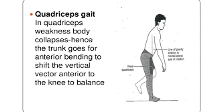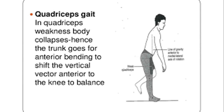Quadriceps paralysis leads to loss of extension of the leg and the knee joint. That will lead to a specific gait named the quadriceps gait. When weakness occurs, the body collapses; hence the trunk goes into anterior bending to compensate, to shift the vertical vector interior to the knee balance. Because the quadriceps are paralyzed, the body bends forward to compensate. This gait that develops is called the quadriceps gait.